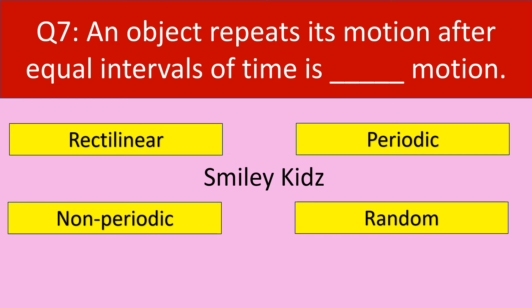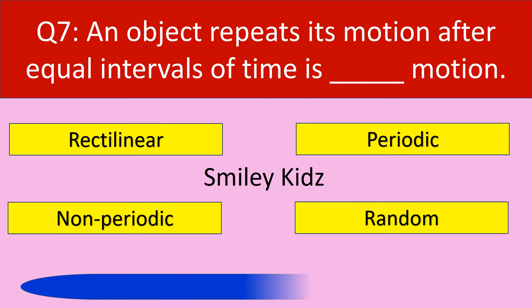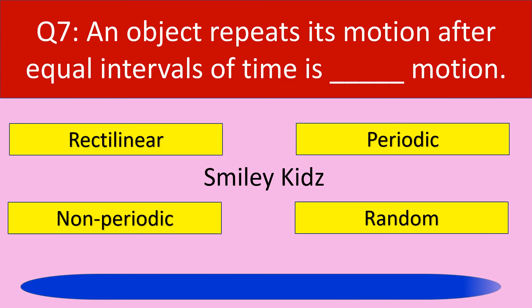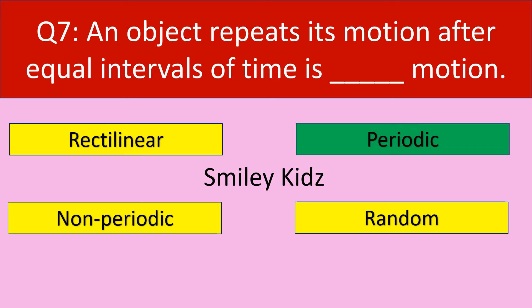Question number 7. An object repeats its motion after equal intervals of time is dash motion. Your options are rectilinear, periodic, non-periodic, random. Your time starts now. Time up. The correct answer is periodic motion. An object repeating its motion after equal intervals of time is periodic motion.